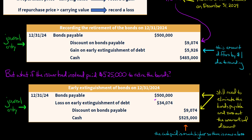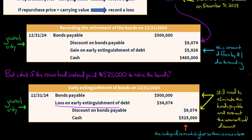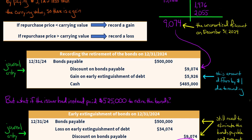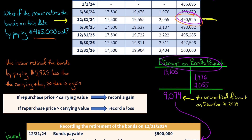What is different is the cash credit — instead of $485,000, we credit $525,000. Because of that, to make debits and credits balance, we need a debit of $34,074. Since losses increase with a debit and gains increase with a credit, we record a loss on the early extinguishment of the bonds. Another way to think about it: we had to pay $525,000, which is more than the carrying value at retirement — whenever you pay more than carrying value to retire bonds, you record a loss.